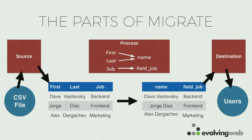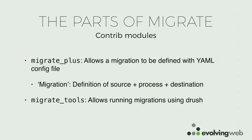When you use Migrate, you also use a couple of contrib modules that are really important. The core of Migrate is in core, but you can't really make the best use out of it without some contrib modules — both written by Mike Ryan, who also gave me the t-shirt. Migrate Plus is a contrib module that lets you define migrations with YAML files — you don't have to write any code. And then there's Migrate Tools, which lets you run a migration using Drush instead of having to write custom code to do it.